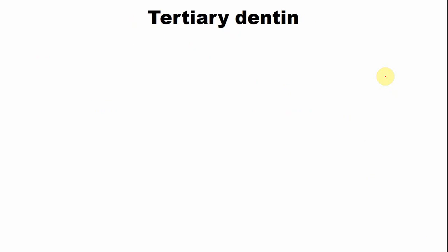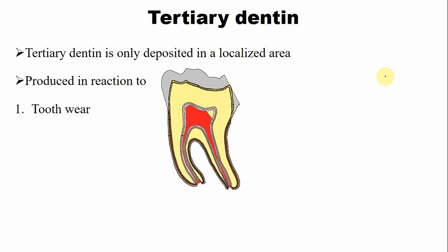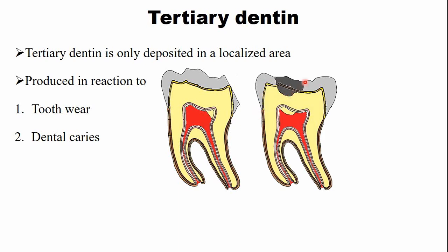The third type is the tertiary dentine. Tertiary dentine is deposited in a localized area just below a stimulus, in reaction to tooth wear, abrasion, or trauma to the tooth structure. For example, in response to dental caries, tertiary dentine is deposited in the pulp just below the area of decay, changing the shape of the pulp chamber.